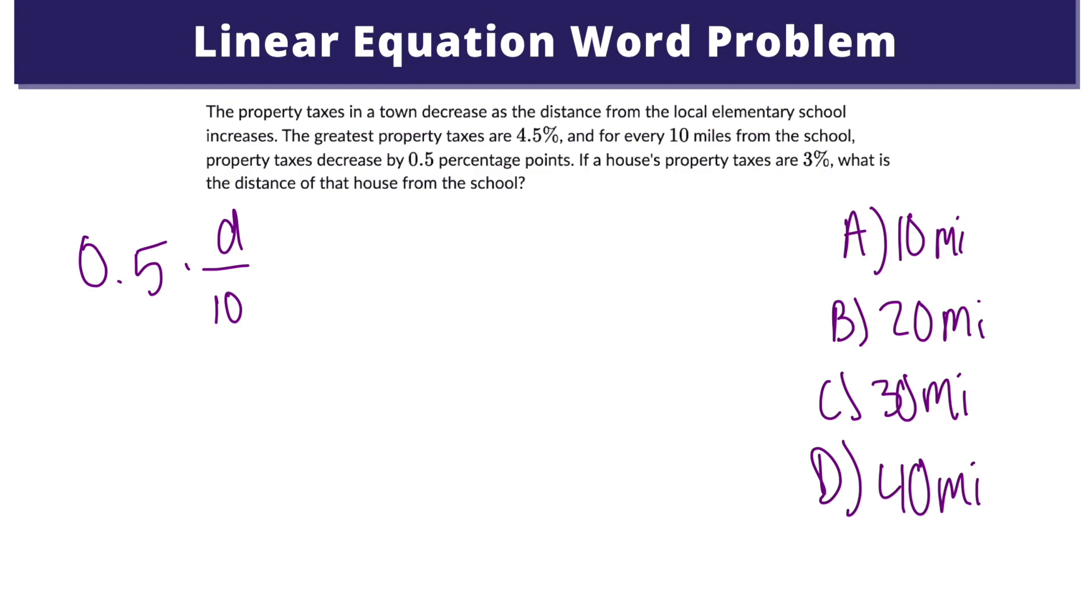This is the decrease in taxes for a house d miles from the school. If the greatest property tax rate is 4.5 percent, then 4.5 minus 0.5d divided by 10 is the property tax of the house d miles from the school. So now we can use this equation to figure it out. We will have 4.5 minus 0.5 divided by 10d equals 3.